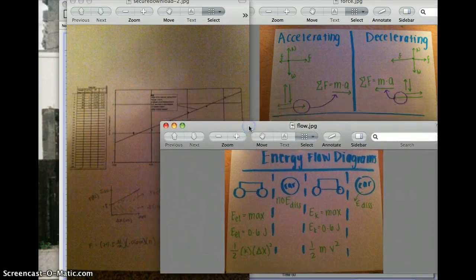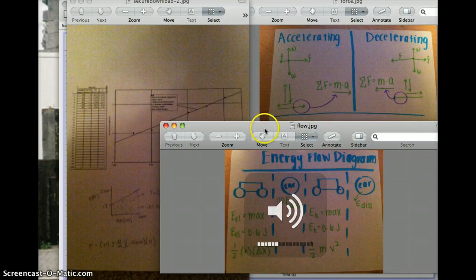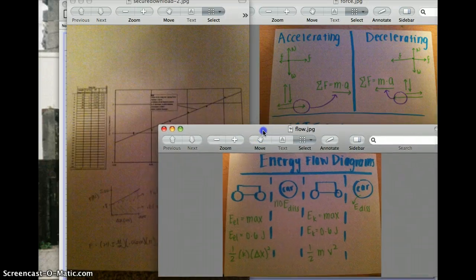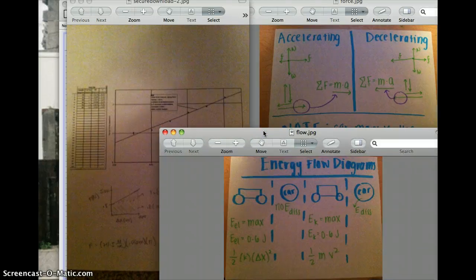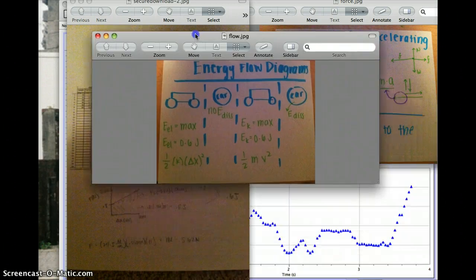In the energy flow diagrams, since we know that E elastic and E kinetic are at their max and they're the same thing, they therefore both equal 0.6 joules on the energy flow diagram. However, they do have different formulas.